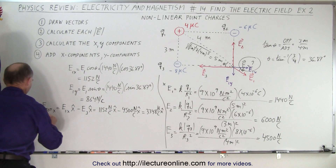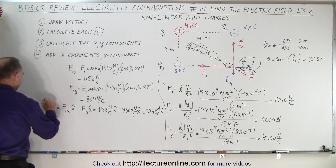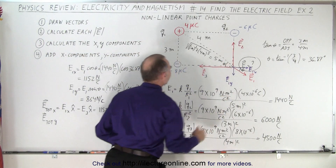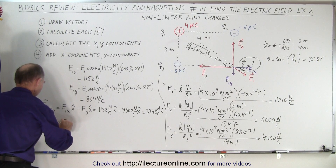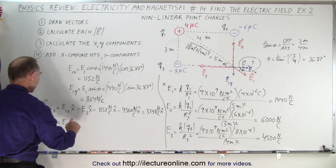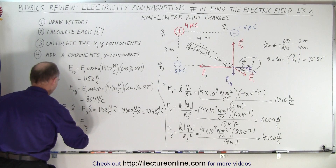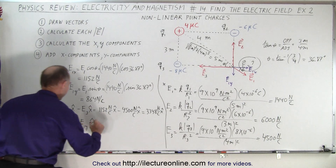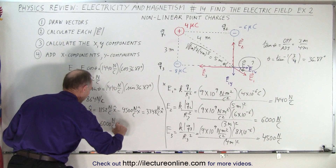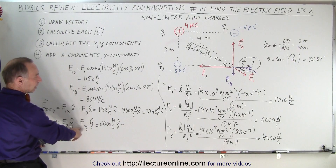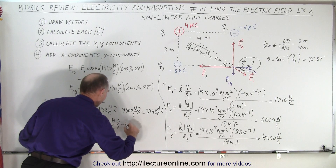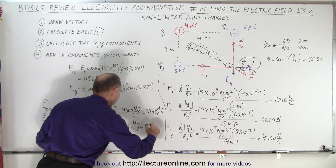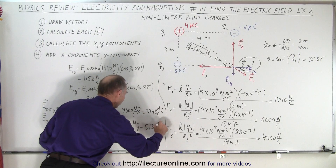Now for E_total in the Y direction. E2 is positive — 6,000 N/C in the Y direction. E1Y is in the negative Y direction, so we subtract it: 6,000 − 864 = 5,136 N/C in the Y direction.